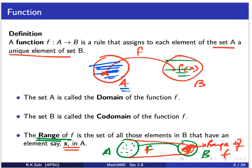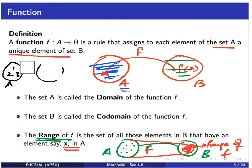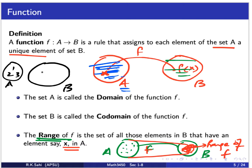For example, let's say I have a set A with elements {1, 2, 3} and a set B with a star, a smiley face, and an element k. Here, 1 goes to star, 3 also goes to star, and 2 goes to the smiley face. But k has nowhere to go — it has no preimage. This is still a valid function.